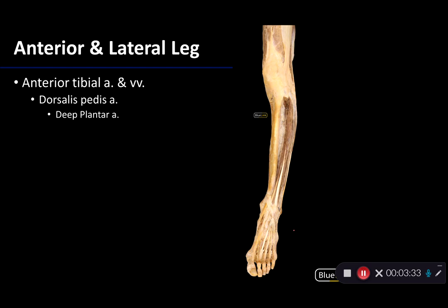Looking at the anterior leg, the anterior tibial artery is the dominant blood supply to both the anterior and lateral compartments of the leg, although the lateral compartment also has some blood supply from the fibular artery. As we move into the foot, the anterior tibial artery becomes the dorsalis pedis artery, which is the pulse point for the foot. The dorsalis pedis artery dives deep through the surface of the foot to become the deep plantar artery.